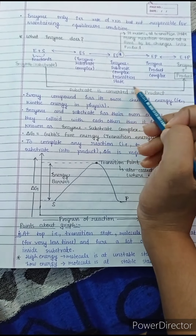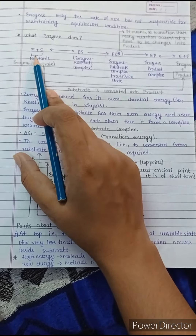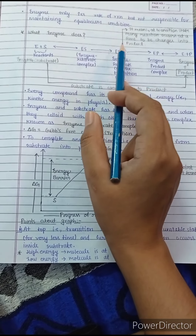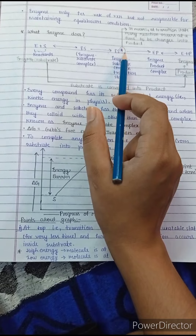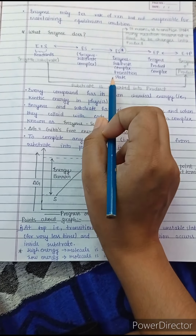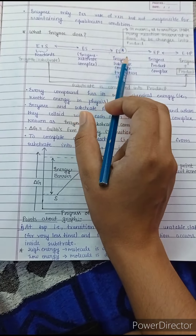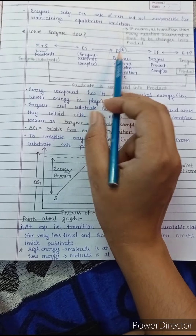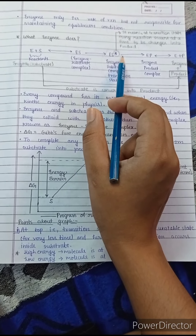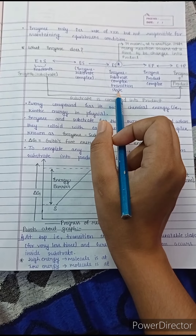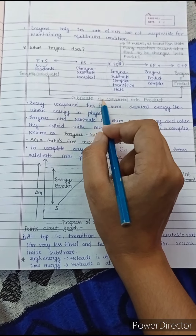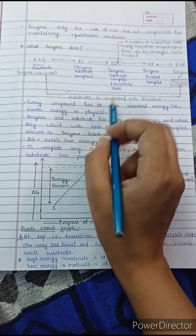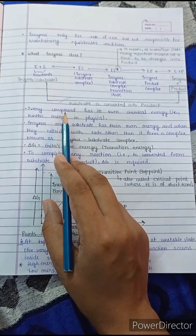The transition state is something new, because we generally see that enzyme plus substrate forms the enzyme-substrate complex and then it is converted into enzyme and product. The transition state is a kind of unstable state where a lot of reaction occurs inside the substrate — it is not a stable energy state. This is the phenomenon in which the substrate is finally converted into the product.